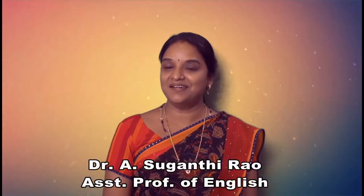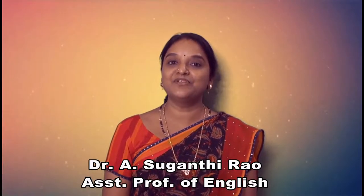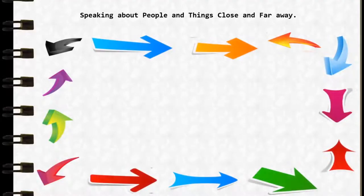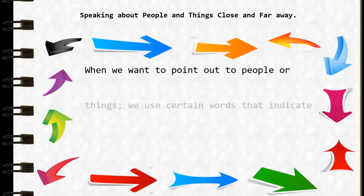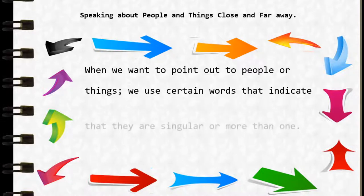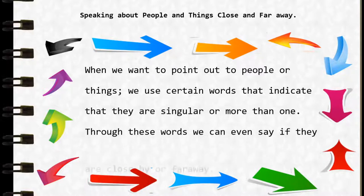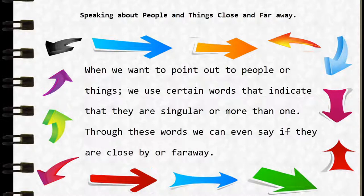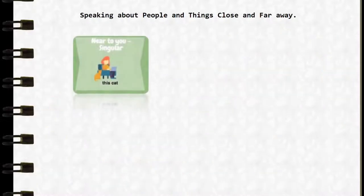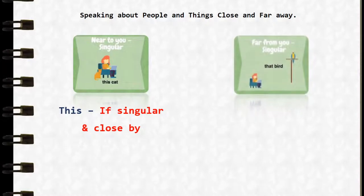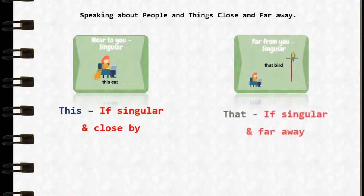Welcome learners to yet another episode of Basic English For Use. In this episode, when we want to point out people or things, we use certain words that indicate if they are singular or more than one. Through these words, we can even say if they are close by or far away. For example, 'this cat' — 'this' is singular and close by; 'that bird' — 'that' is singular and far away.